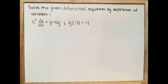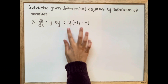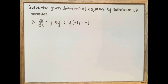Solve the given differential equation by separation of variables. x squared dy over dx is equal to y minus x times y. After we find our equation, we're going to use this initial value to solve for our c value.